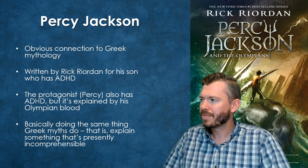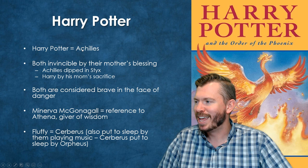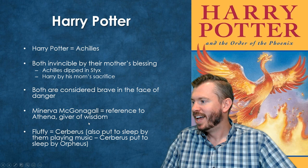Harry Potter also has tons of allusions to Greco-Roman mythology — like the Order of the Phoenix. Harry can kind of be seen as a less terrible Achilles, where he gets his mother's blessing that makes him invincible. You can see other references throughout the text: Minerva McGonagall, and then the dog Fluffy, who is kind of like Cerberus.